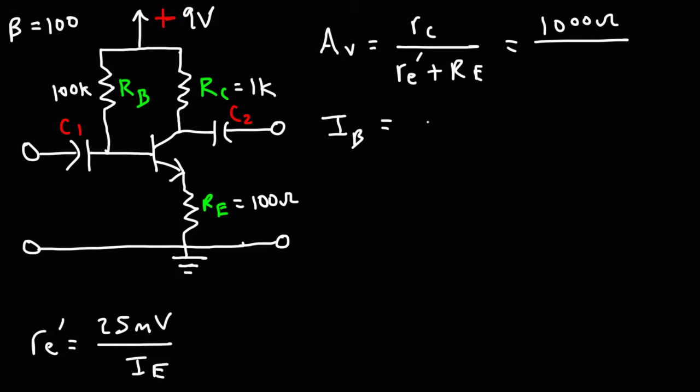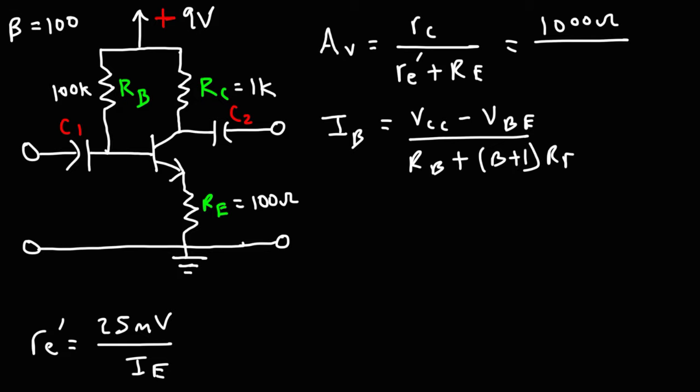For this particular circuit, the formula to calculate the base current is VCC minus VBE divided by RB plus beta plus 1 times RE. For those interested in how that formula was derived, there's another video on YouTube entitled 'Emitter Feedback Bias Circuit' which explains how to derive it. Check out the links in the description section below, where I'll post that video.